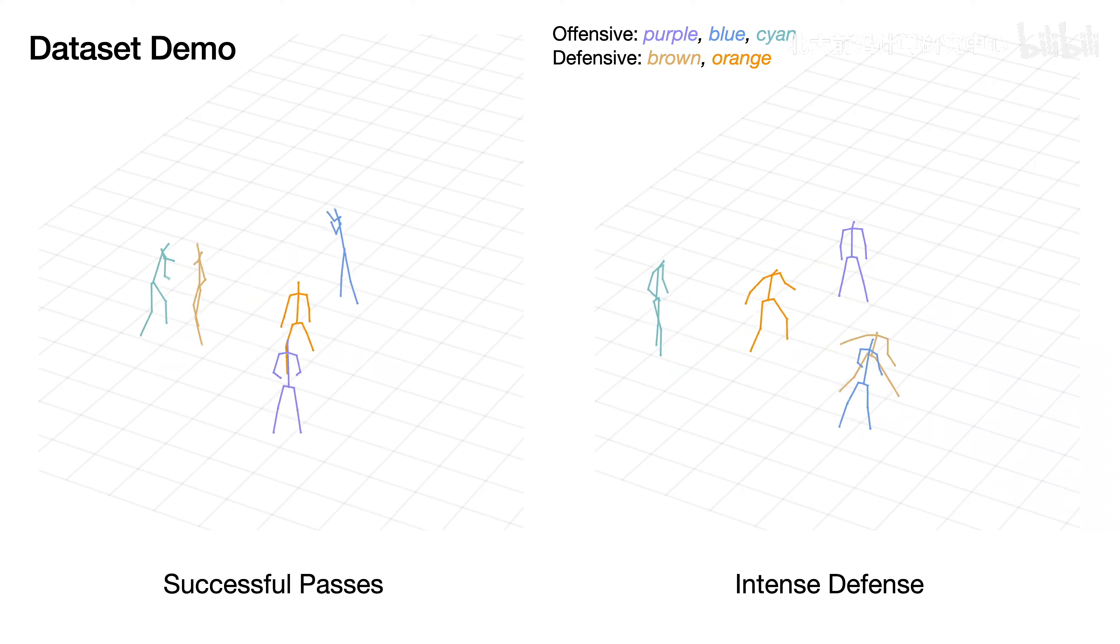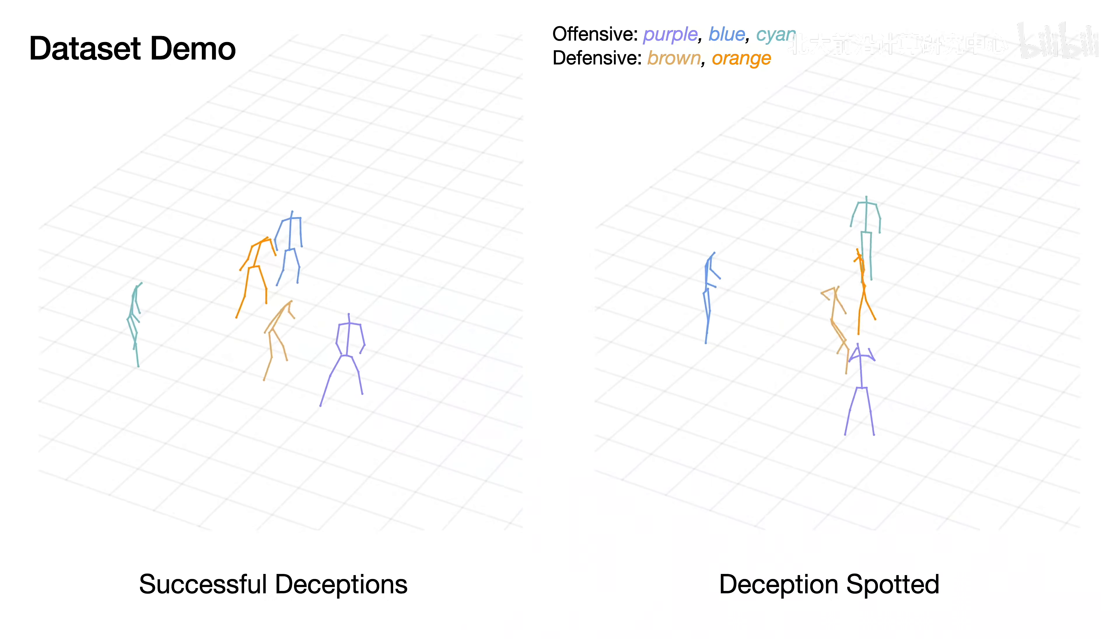Player Purple nearly falls to the ground to make a catch. In addition to regular actions, there are many deception moves in our dataset. On the left, multiple successful fake passes are implemented. At the end of the video on the right, however, a fake pass is seen through and blocked. These cases indicate strong strategic interactions between the offense and defense sides.